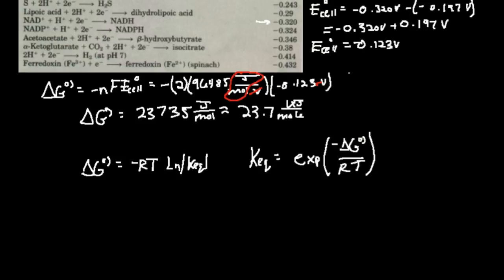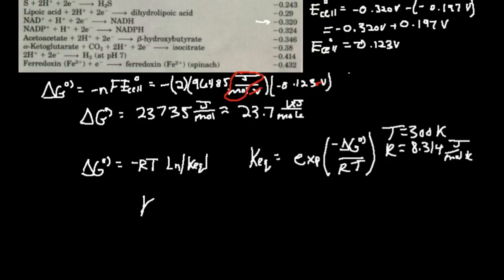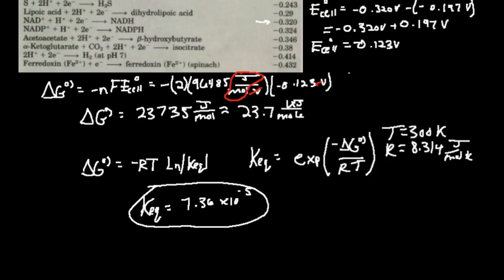I'll choose a temperature of 300 Kelvin and use the gas constant 8.314 joules per mole·Kelvin. Taking the delta G in joules per mole, dividing by 8.314, dividing by 300, taking the negative, and then exponentiating gives an equilibrium constant of about 7.36 times 10 to the minus fifth. Equilibrium constants are unitless, so that's my equilibrium constant.